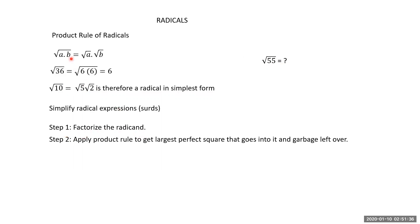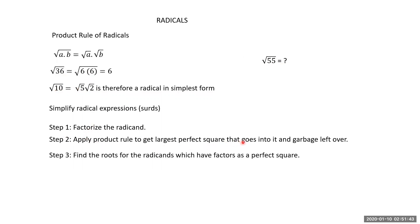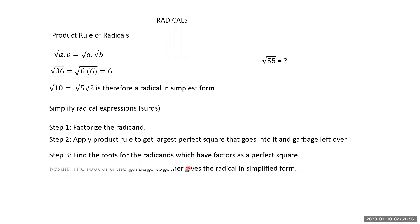The procedure is: first, factorize the radicand; then apply the product rule to get the largest perfect square factor and the leftover. The root of the perfect square combined with the leftover gives the answer. For example, 36 factors as 6 × 6; find the root of 36 which is 6, and the leftover is nil.